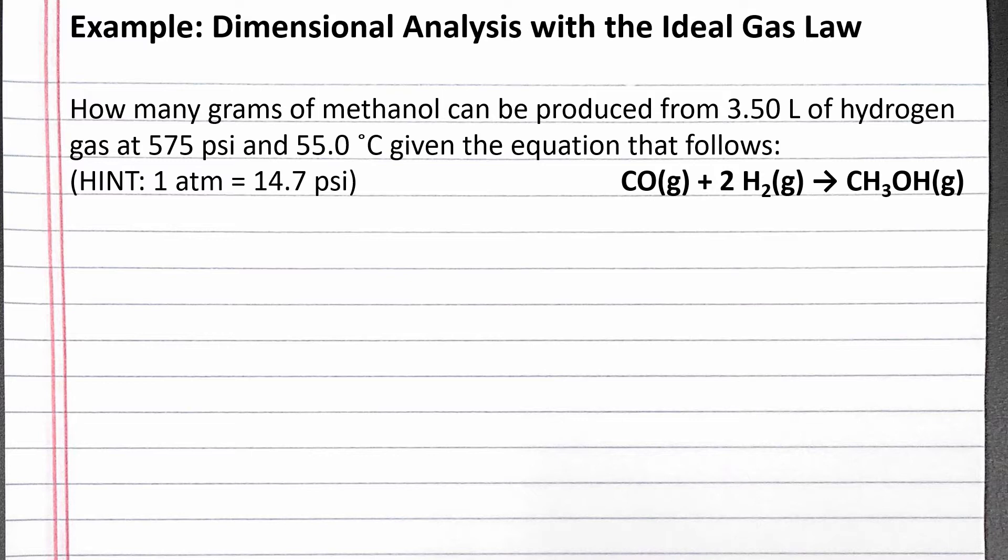Our problem reads: how many grams of methanol can be produced from 3.50 liters of hydrogen gas at 575 psi and 55.0 degrees Celsius given the equation that follows? With the information given,